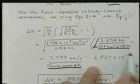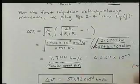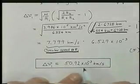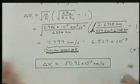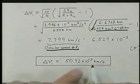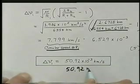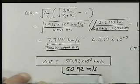And then we multiply by this small number from the parenthetical term to get a grand total of 50.92 times 10 to the minus 3 kilometers per second, or 50.92 meters per second.